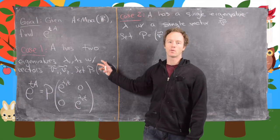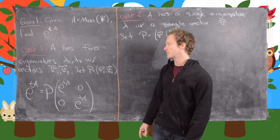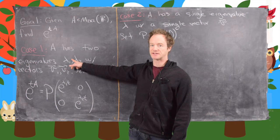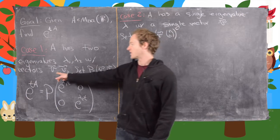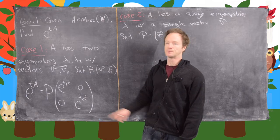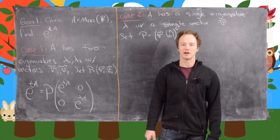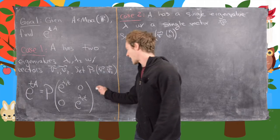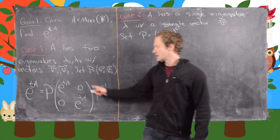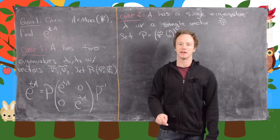Here's case number one, which I'm not going to go over in detail because it's very similar to what we had done in the past when there is no variable. That is, if A has two eigenvalues — these may not be distinct — but the important thing is that there are two distinct eigenvectors V1 and V2. If we set P to be the diagonalizing matrix with columns V1 and V2, then E to the TA is given by P times the diagonal matrix with entries E to the lambda 1T and E to the lambda 2T, times P inverse.